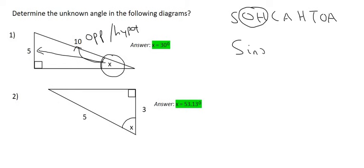So what we'll do is we'll say sin of x equals the opposite which is 5 over the hypotenuse which is 10. You then say shift sin of 5 over 10 on your calculator and that'll give us 30 degrees, and so the angle is 30 degrees.